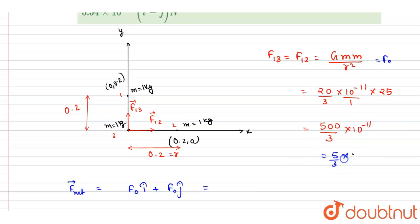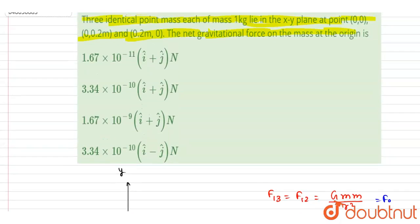5/3 is 1.67 × 10⁻⁹ (î + ĵ). Now you can check for the option here: 1.67 × 10⁻⁹ (î + ĵ). So C is the correct answer.